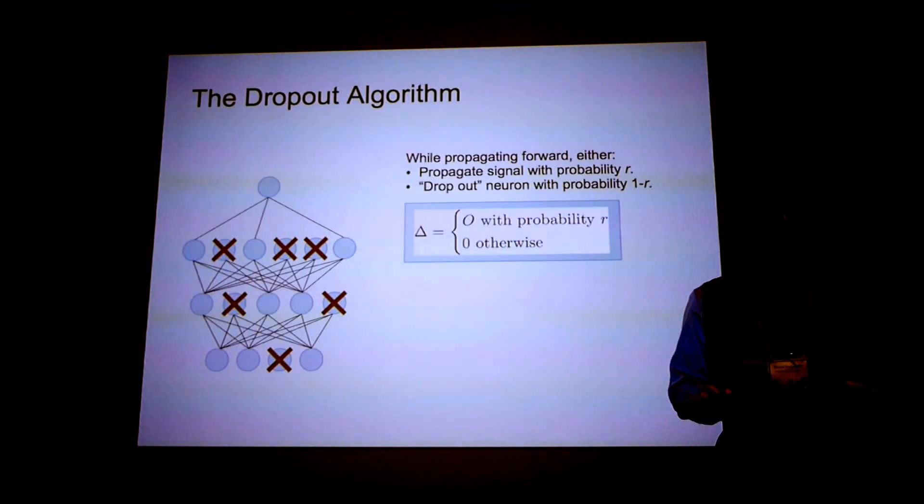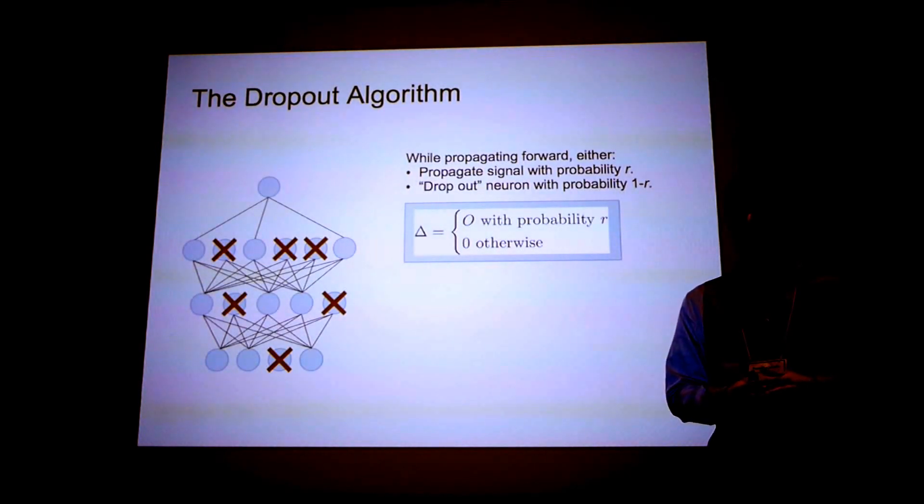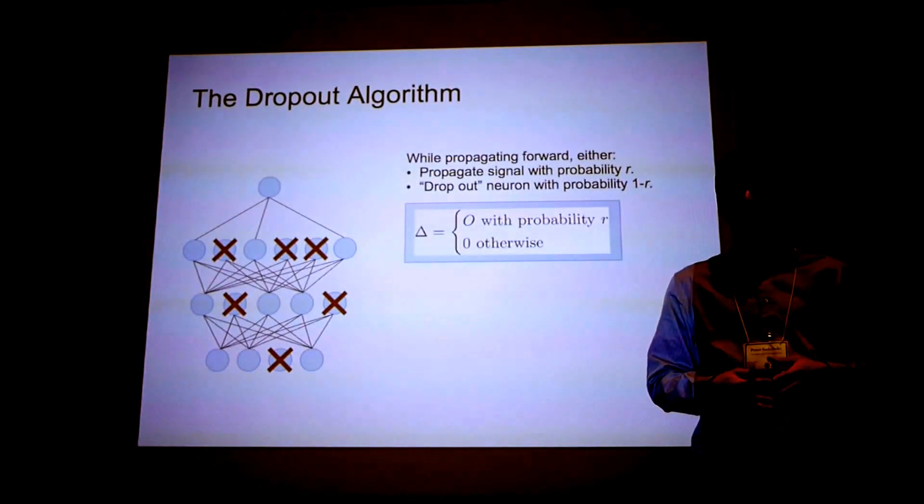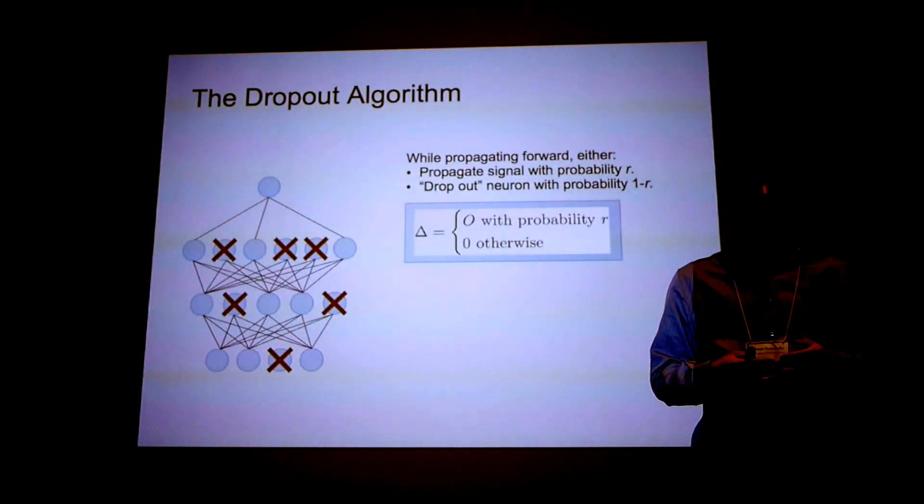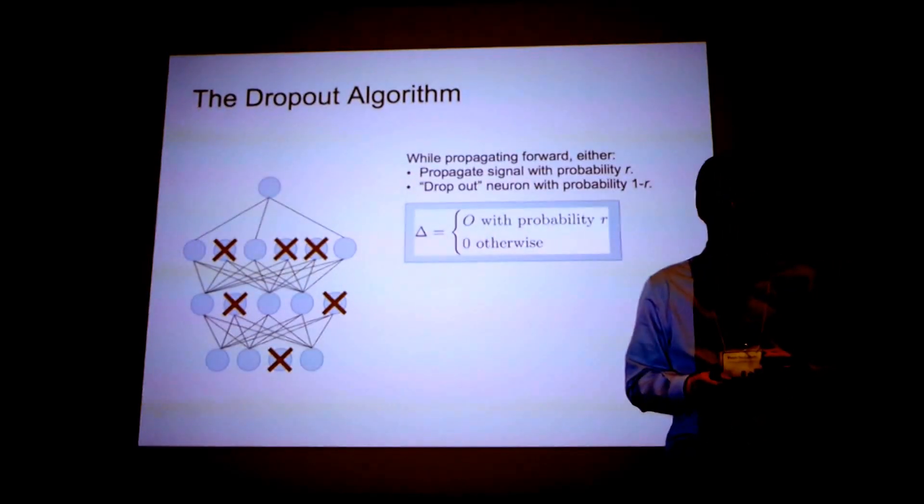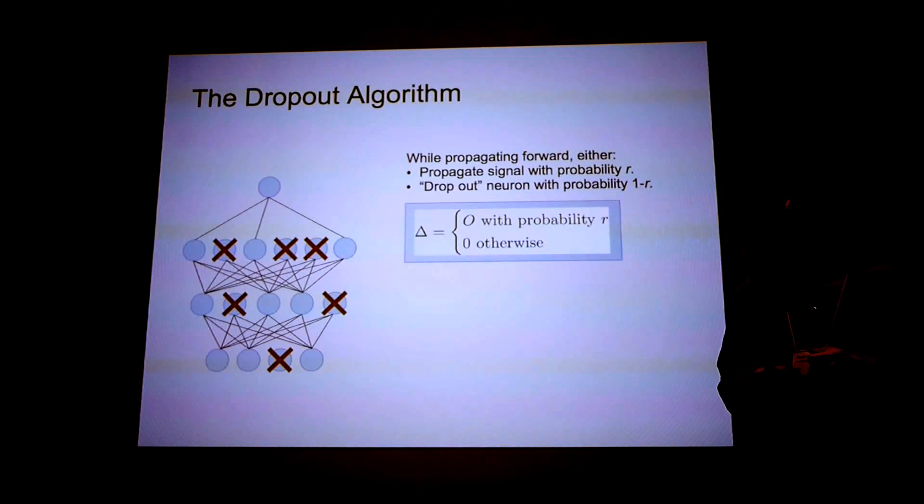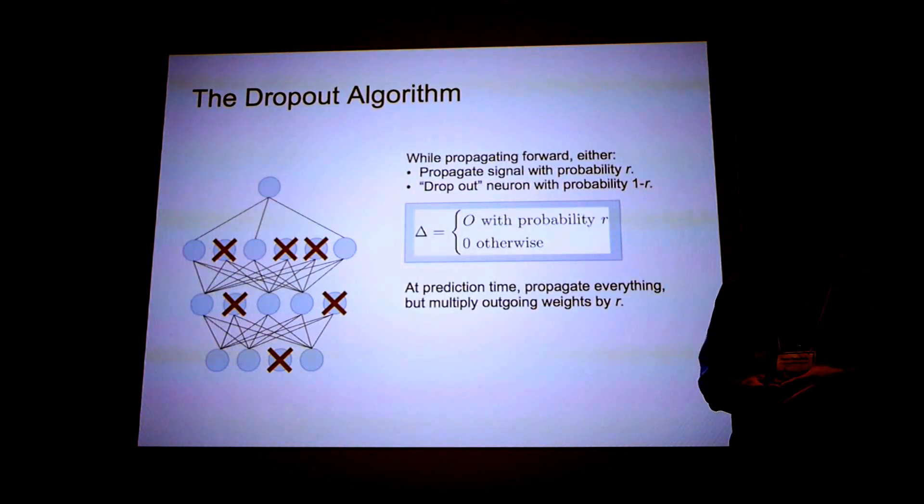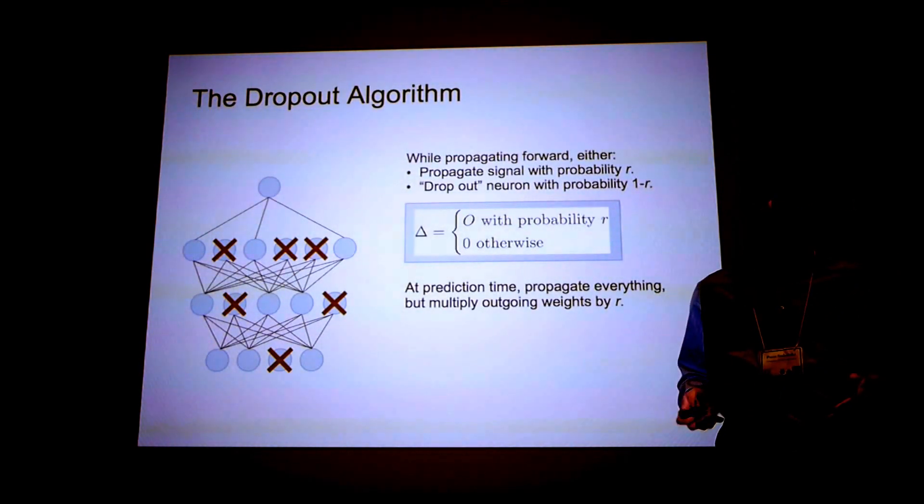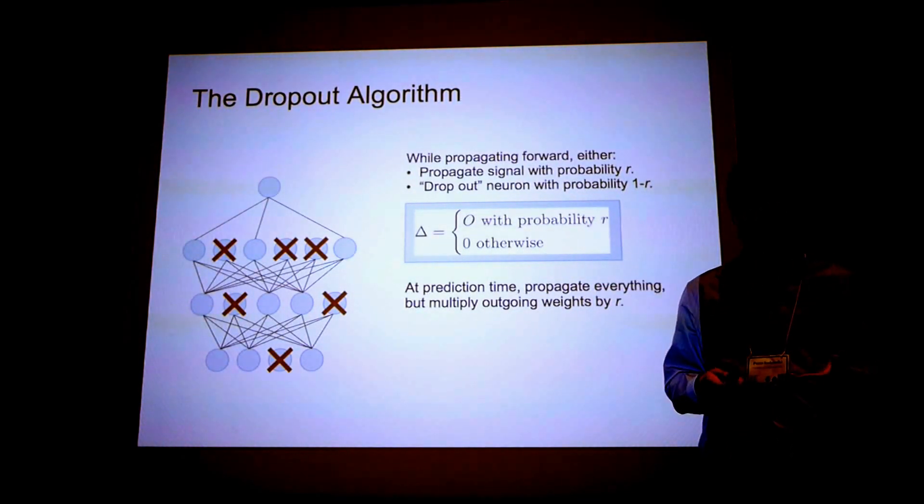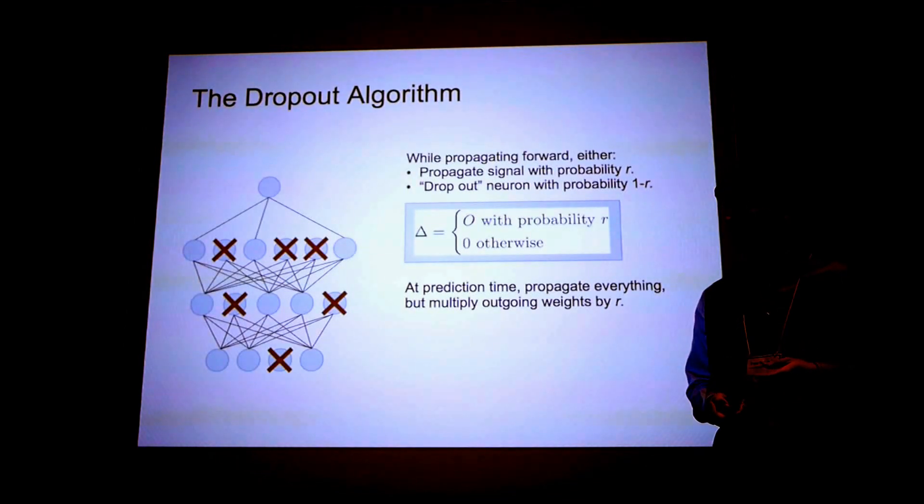So everyone probably knows what the dropout algorithm is by now. But just to recap, it's a modification of the standard backpropagation with gradient descent in which each training iteration, we remove some of the neurons in our network. And we remove them independently with probability r. And at prediction time, we multiply all the weights by r and we get a deterministic prediction out of the network.